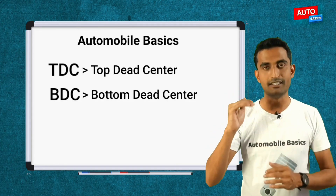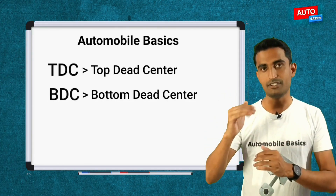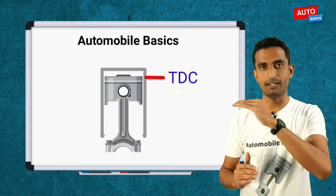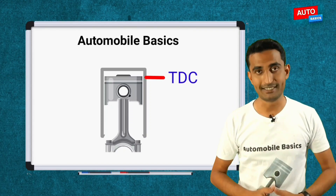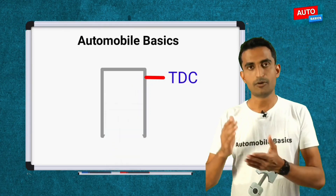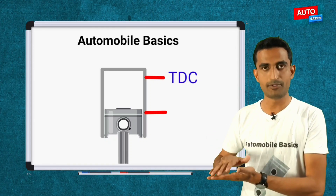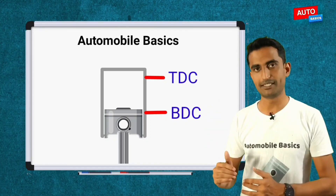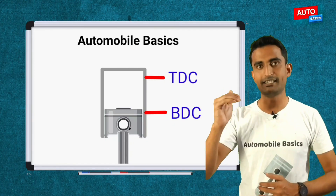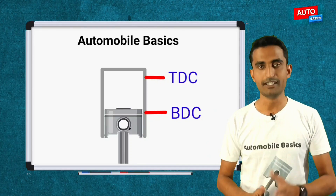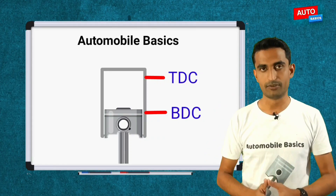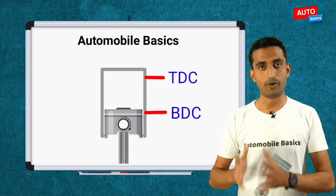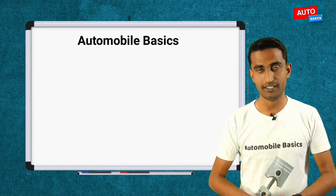What is the topmost position? The Top Dead Center is when the piston is at its maximum upward travel — that is TDC. The Bottom Dead Center is when the piston is at its maximum downward travel — that is BDC. These positions are very important abbreviations used every time when discussing engine operation.